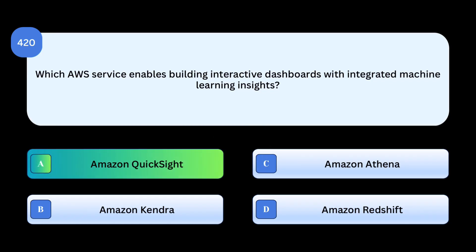Correct answer: Amazon QuickSight. QuickSight is a BI tool for creating dashboards, and it integrates ML for predictive insights. Why others are incorrect: Amazon Kendra is an intelligent search service. Amazon Athena is a query service for S3, not BI dashboards. Amazon Redshift is a data warehouse, not a visualization tool.